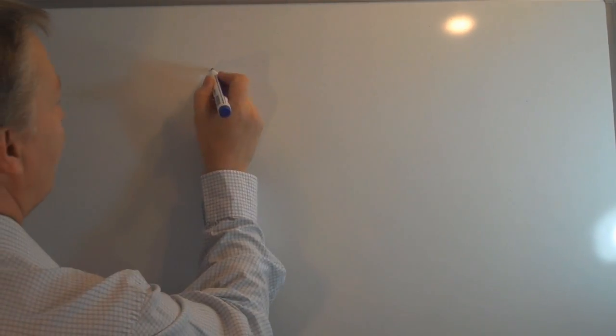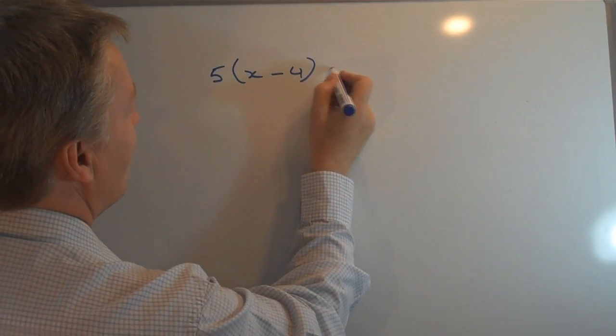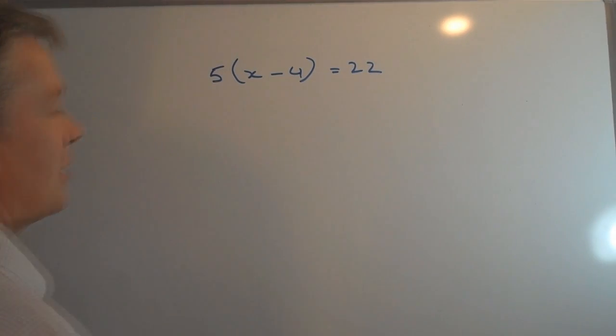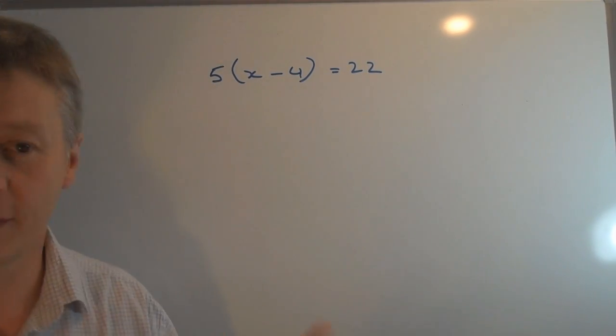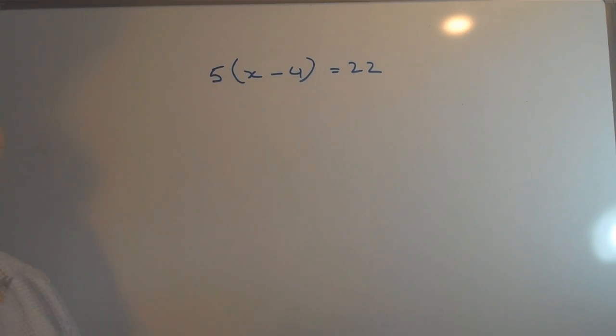What I mean by that is, let's say, for instance, that we have something like this. So we have 5(x minus 4) equals 22. And as part of the exam paper, what they want to do is work out the value of x.